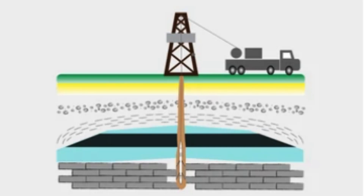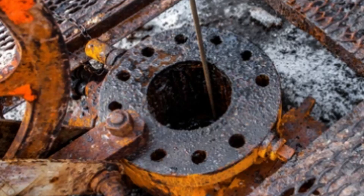Sonic logs measure the speed of sound waves traveling through subsurface materials, providing information about the density and elasticity of rocks and soils. Gamma ray logs measure the natural radiation emitted by subsurface materials, providing information about the lithology and stratigraphy of rocks and soils.